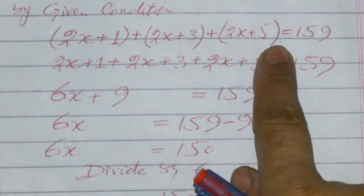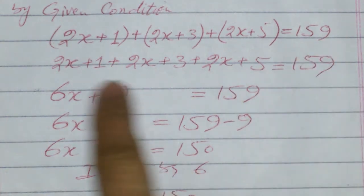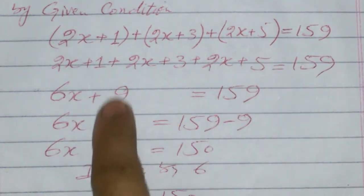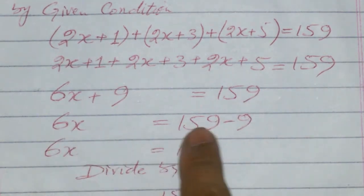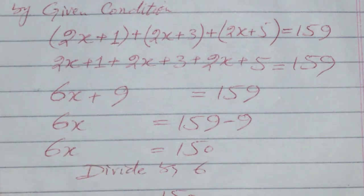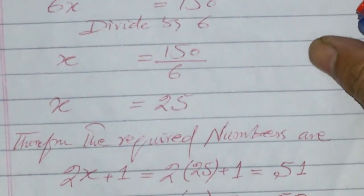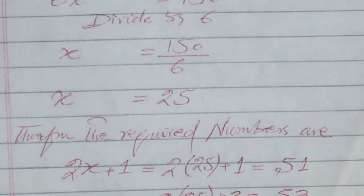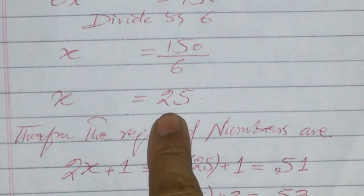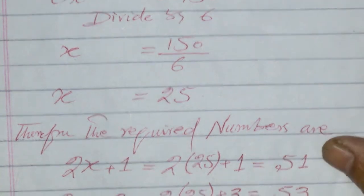After simplification: 6x+9 equals 159. So 6x equals 159-9 equals 150. Now we can calculate x. Dividing both sides, we get x equals 25.